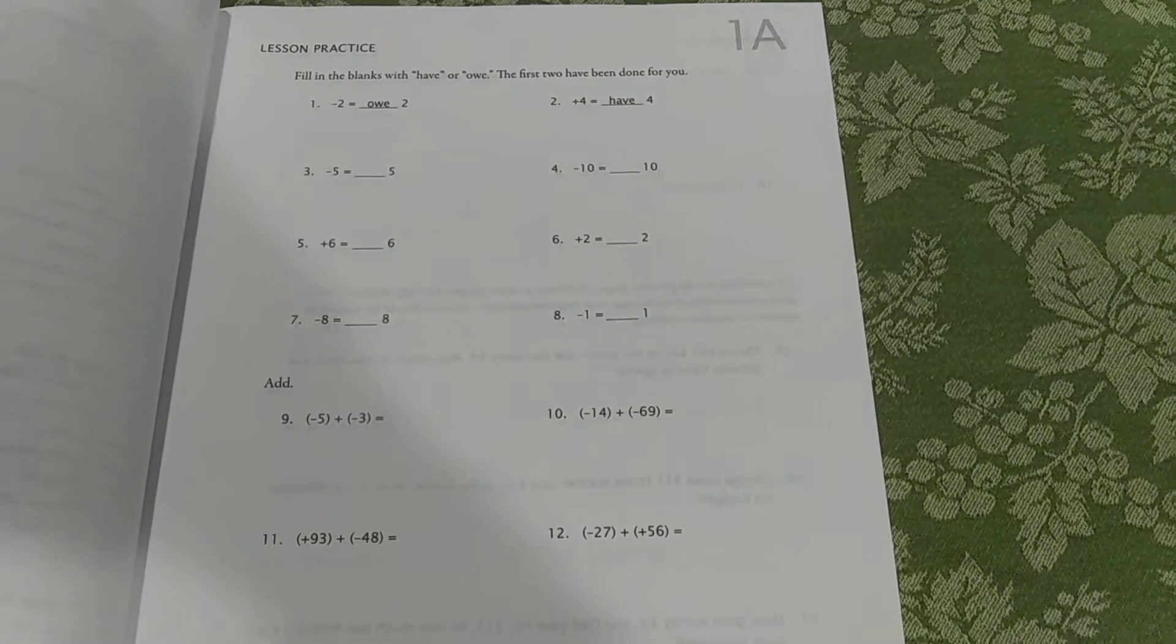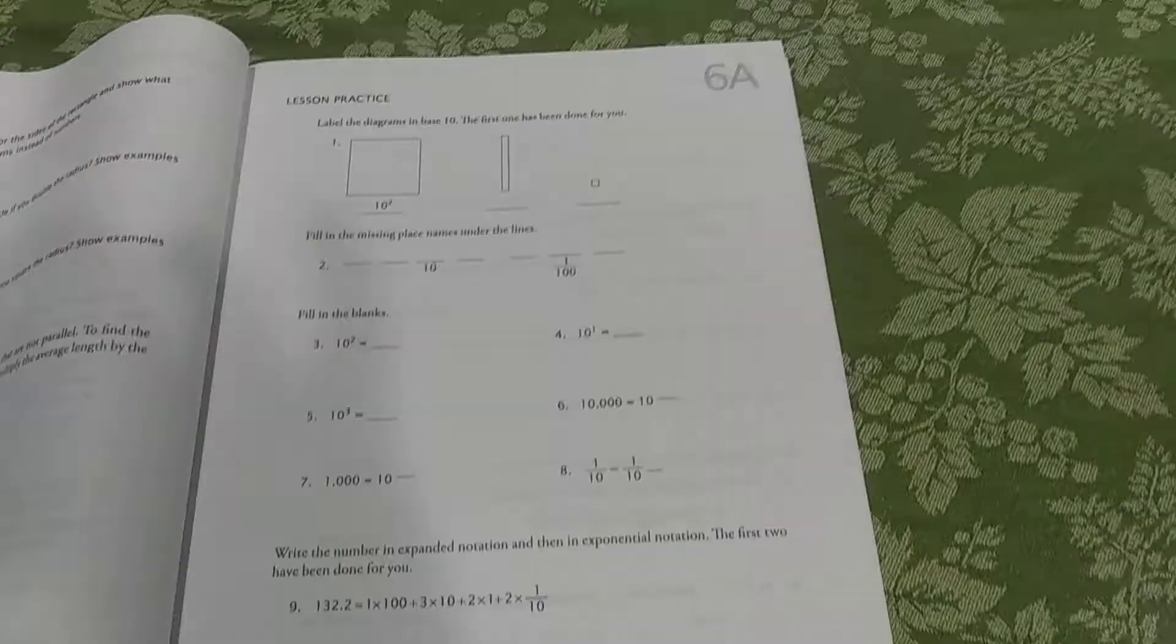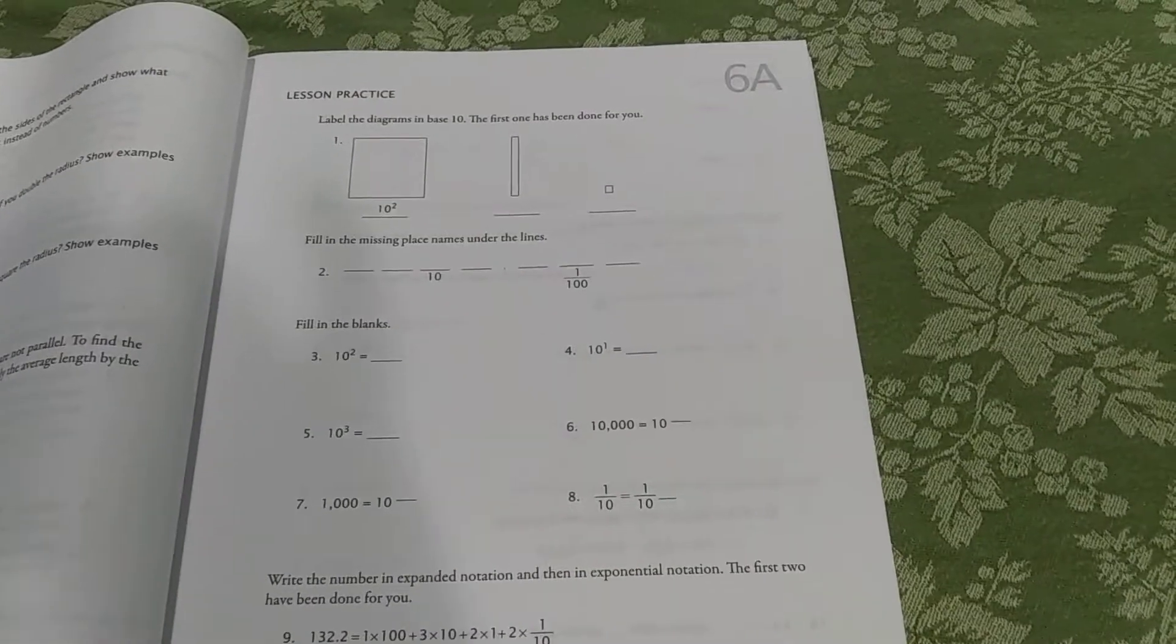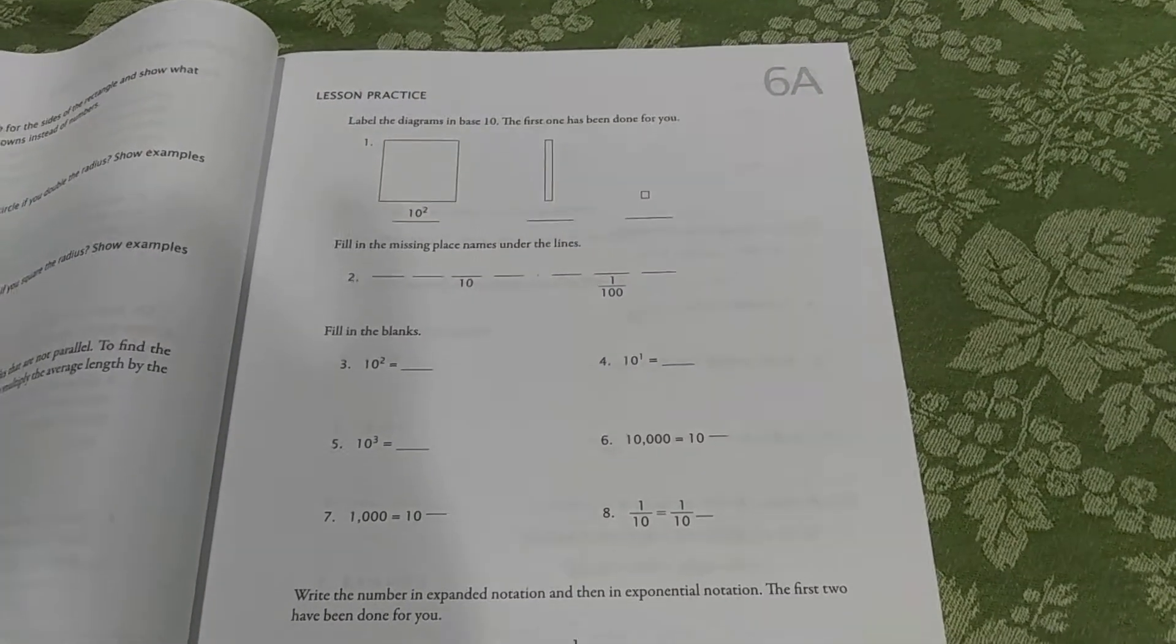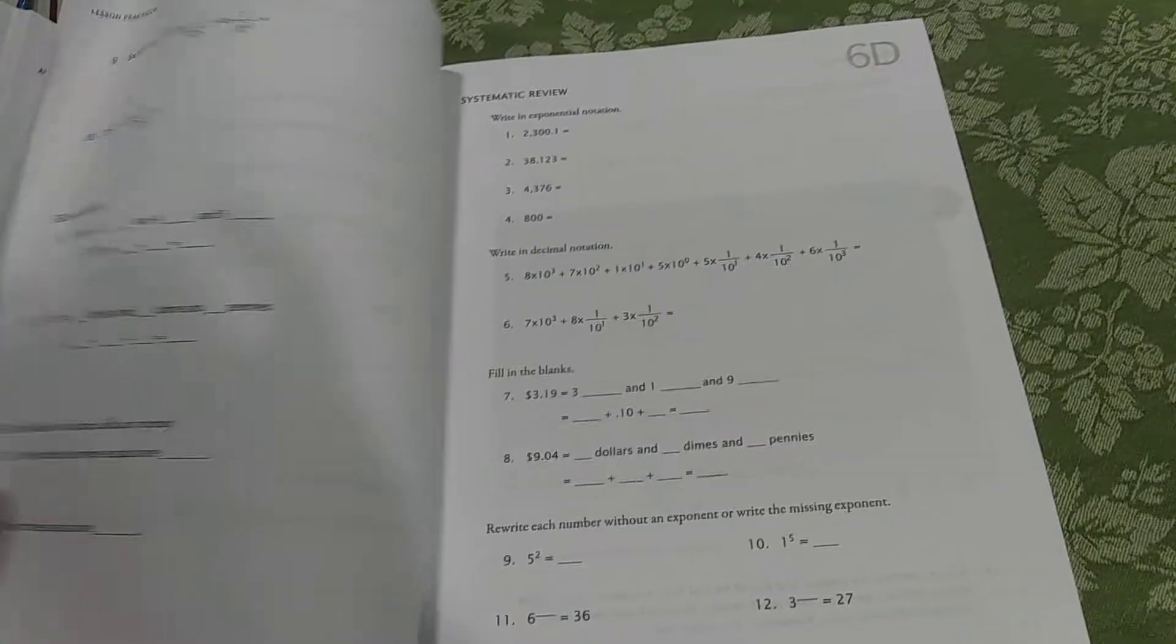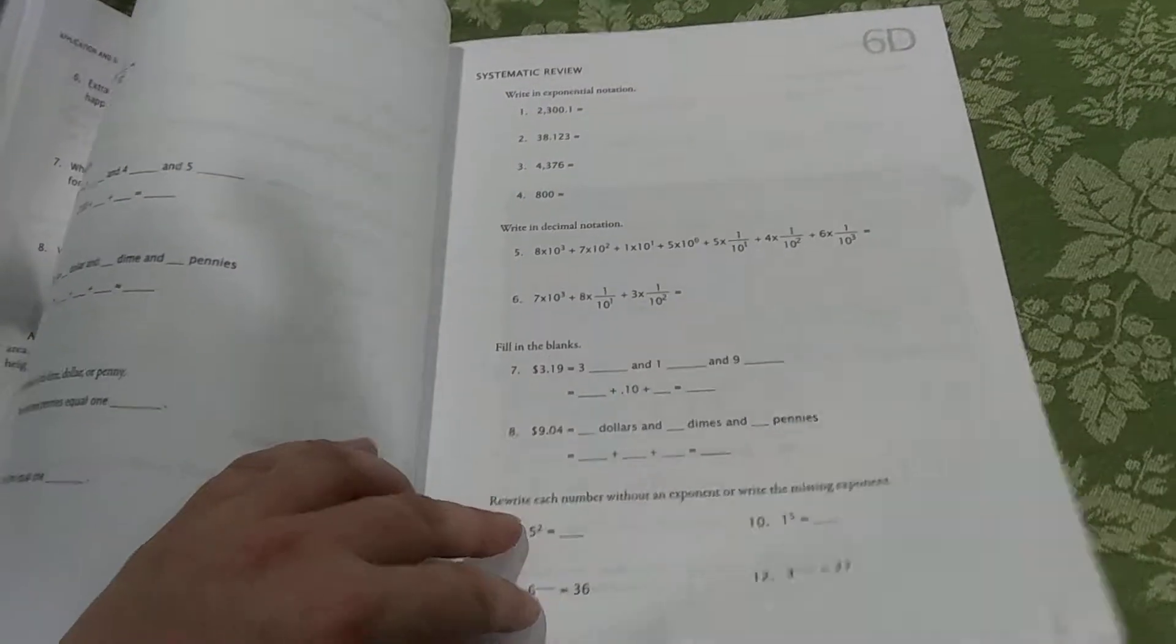Okay, so this is lesson 1A in Pre-Algebra. Two pages. Sorry about that interruption. So here's lesson 6A. So we'll go through lesson A, two pages. Lesson B, two pages. Lesson C, two pages. And then the review is always D.